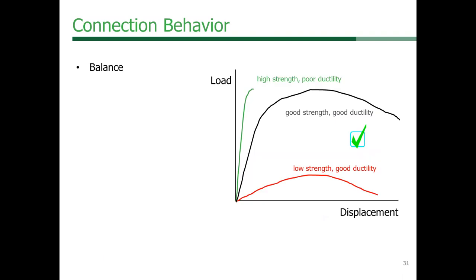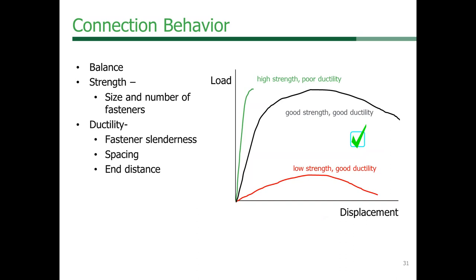A strong ductile connection requires balance. Strength is based on the size and number of fasteners. Ductility depends on fastener slenderness, spacing, end distance, and how load is spread across the length of the connection or member.